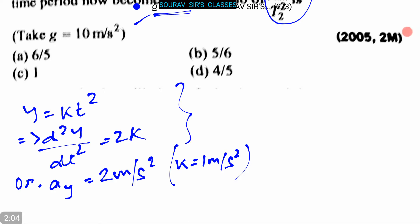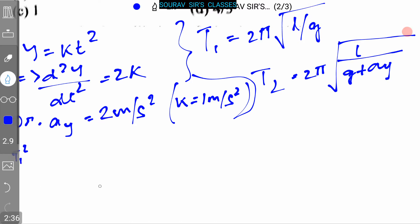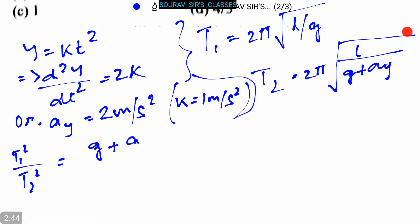Now from this we can write T₁ = 2π√(l/g) and T₂ = 2π√(l/(g + aᵧ)). T₁²/T₂² = (g + aᵧ)/g. Now we are just putting the value of g and aᵧ.